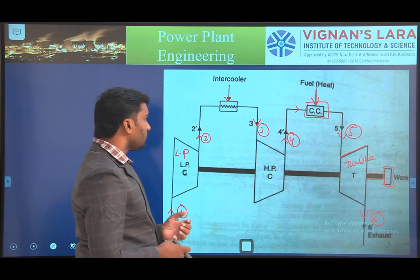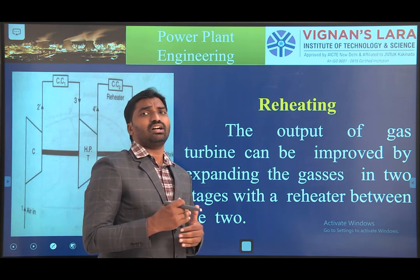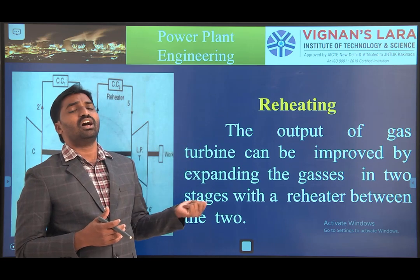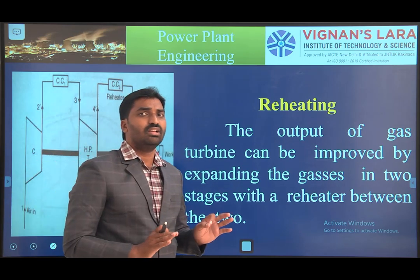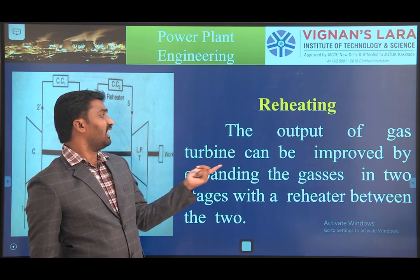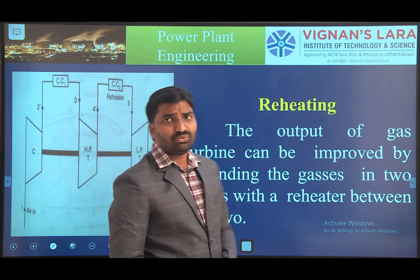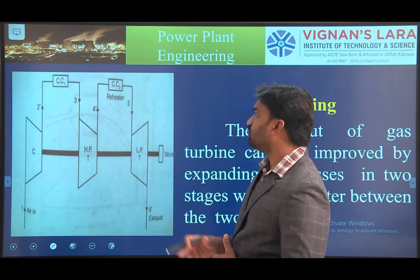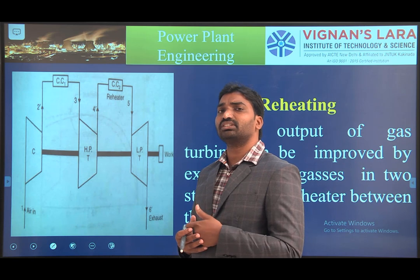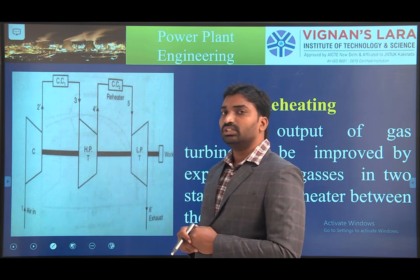The output of the gas turbine can be improved by expanding the gases in two stages with a reheater between the two turbines. In the reheating concept, we use two turbines — one high pressure turbine and one low pressure turbine. This is the main difference from intercooling: intercooling uses two compressors, while reheating uses two turbines.